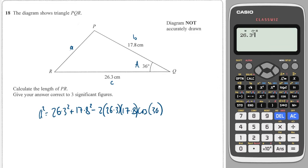26.3 squared plus 17.8 squared minus two times 26.3 times 17.8 times cosine of 36 close brackets equals 251. We write that down so the examiner knows what we're doing and then we square root that to get our value and we press square root answer and it's 15.8.